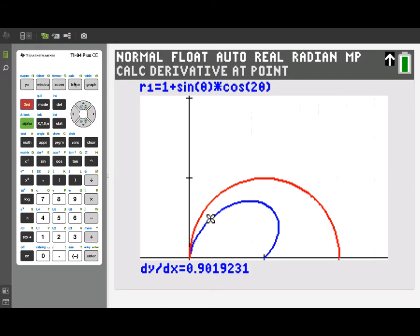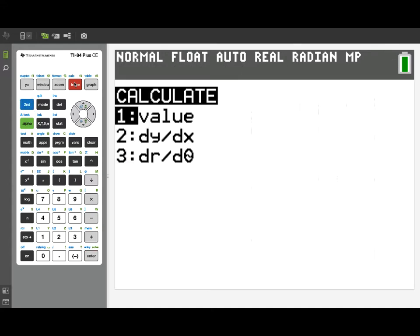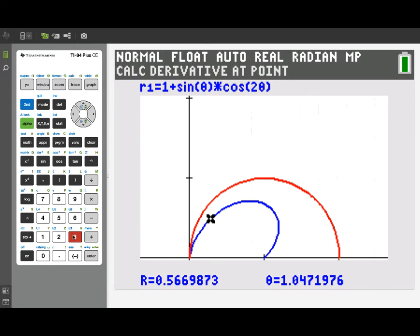Now if I go back to the calculate menu, you'll notice there's also dr d theta. If we calculate dr d theta instead, we're going to find that dr d theta is approximately negative 1.75. That represents the instantaneous rate of change of R with respect to theta at that point.